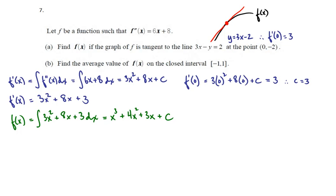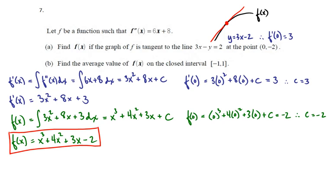The question is, do we have a point on the curve f(x)? We do, that's the point (0, -2). So we know that f(0) equals 0 cubed plus 4 times 0 squared plus 3 times 0 plus c equals -2, and therefore c equals -2. Finally, f(x) equals x cubed plus 4x squared plus 3x minus 2, and now we have the answer to part A.